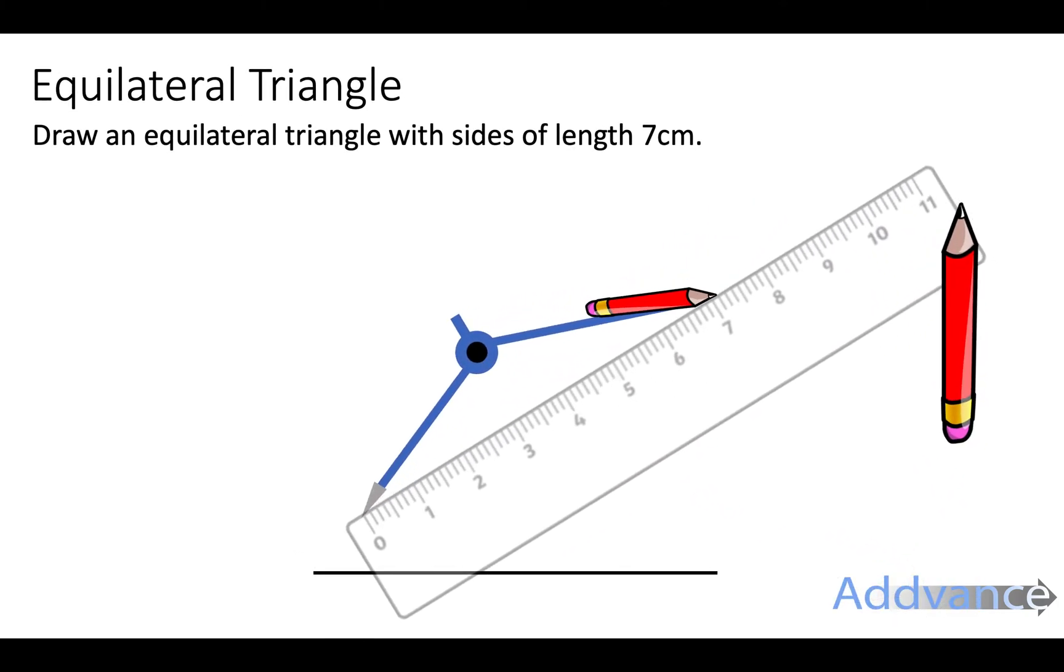Now we set our compass to be 7cm. So you use your ruler to measure a distance of 7cm from the point of the needle to the pencil which is 7cm away. Remember that the ruler starts at 0 a little bit further in, not at the end. So let the needle go exactly where the dash for 0 is, like this.